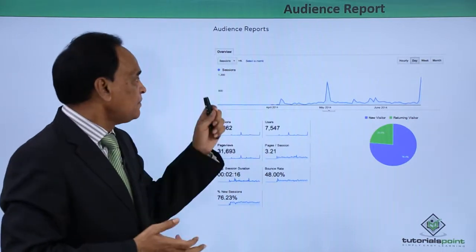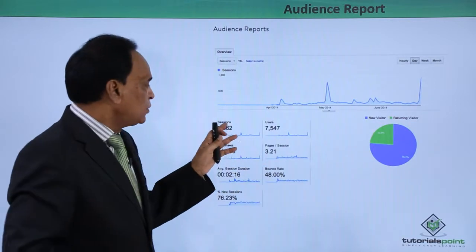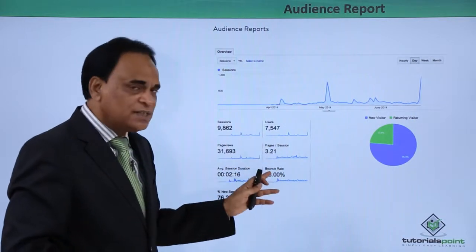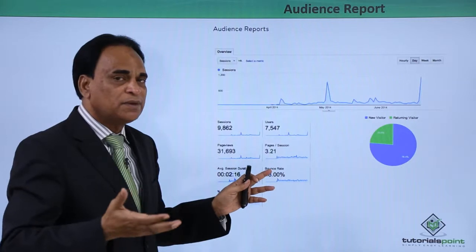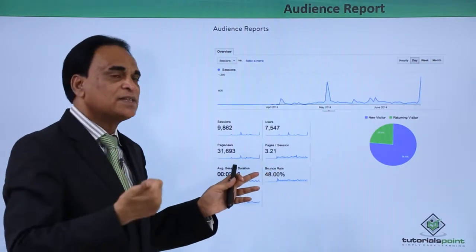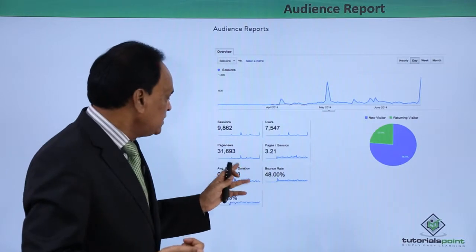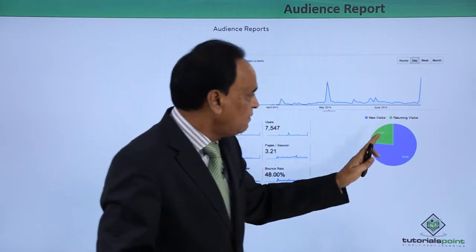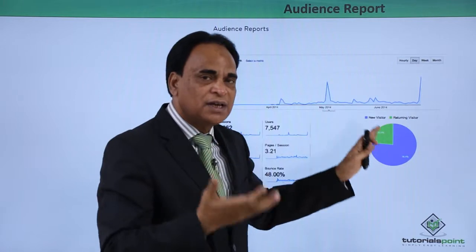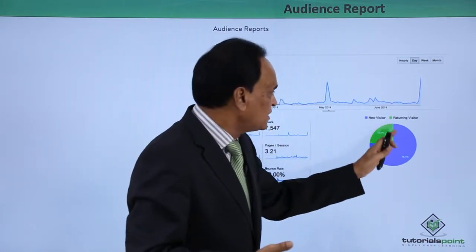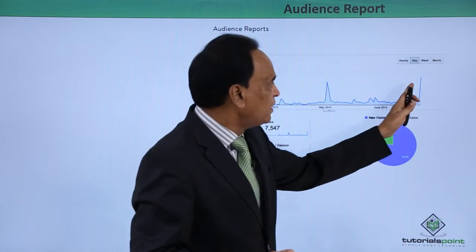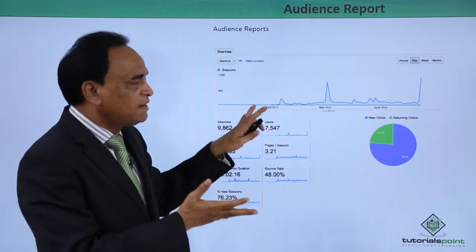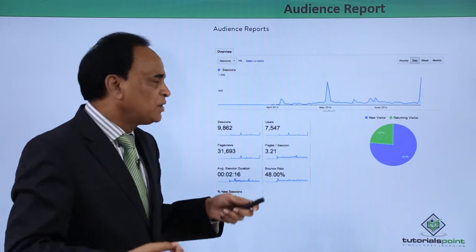Let us check out the screenshot of the audience report. What you have here is the total number of sessions, the users, the page views, the pages per session, and the bounce rate — how many people bounced out right from the first page without walking through the internal pages. You also have the average session duration and new sessions. The entire information can be seen, including new visitors versus returning visitors, and a graph showing how traffic has flowed from the previous day to the current day. This is all available in the audience report dashboard.